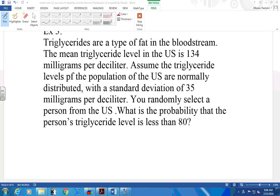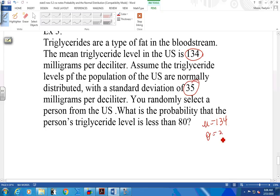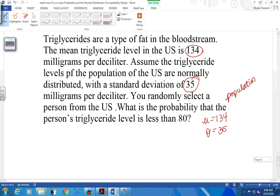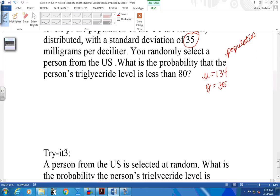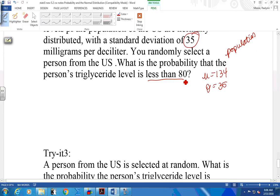So let's pull out the information we need. Do we need this information? What is that? The mean. What else do we need? Standard deviation. This is your population. We're dealing with the population of people in the United States. Where's my probability statement? Less than 80. So the probability that x is less than 80.